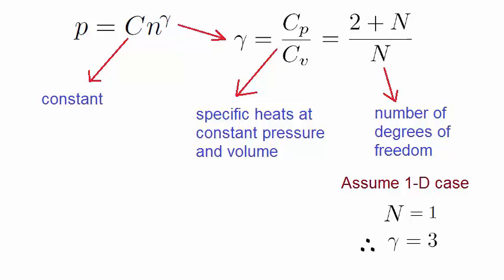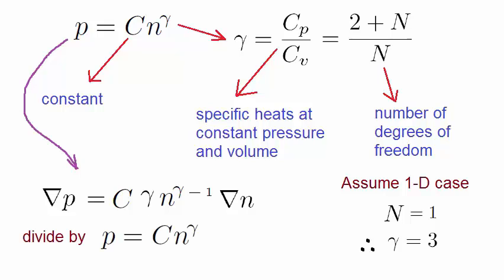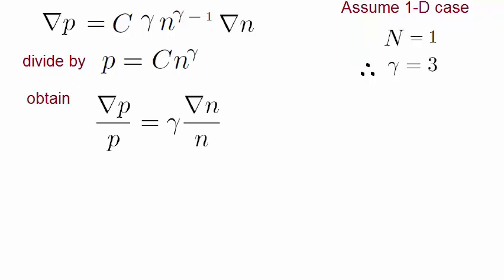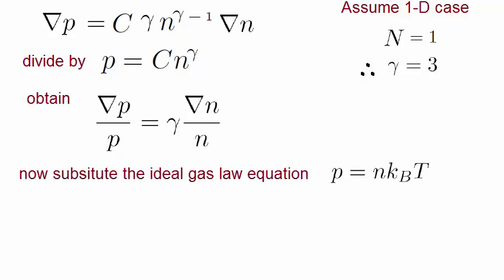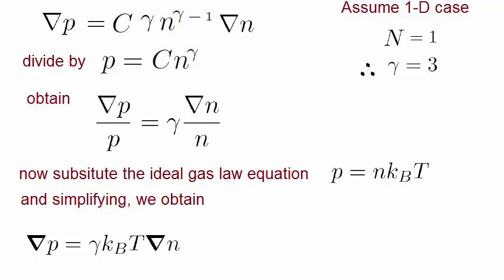Let's differentiate the expression for pressure in the equation of state. We can simplify by dividing both sides by the expression for the equation of state. On simplifying, we obtain this. We need to eliminate P by substituting the ideal gas law equation. Recalling that this is a one-dimensional problem, we can rewrite the expression as this.